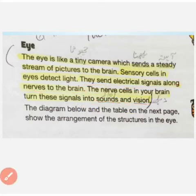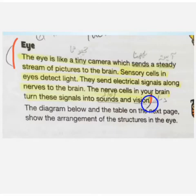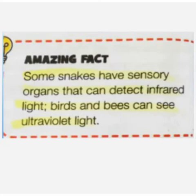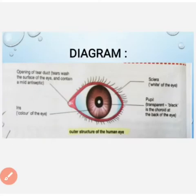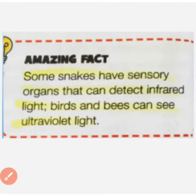This is a short question which the video can also answer. The brain has a short answer. The next question is: snakes detect infrared light, but birds and bees can see ultraviolet light. This is an amazing fact — what light do snakes detect, and what light do birds and bees detect?